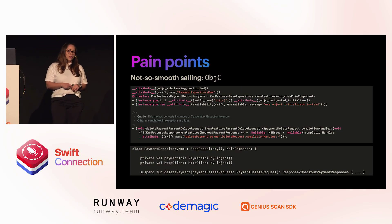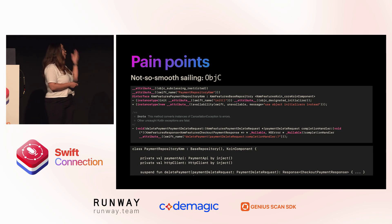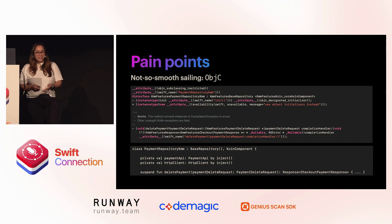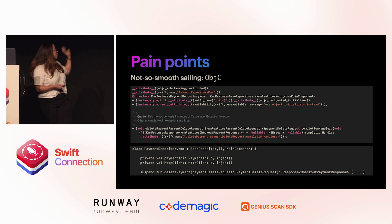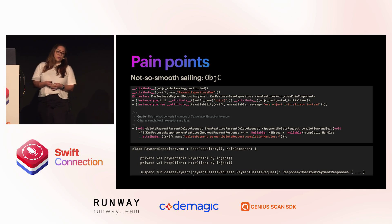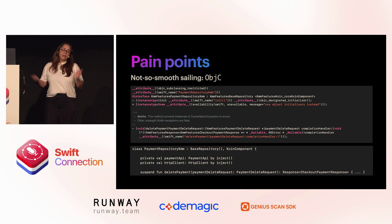The most known pain point of KMM is that it transpiles into Objective-C headers, which look like that. And if you're old like me, you might see that and your heart feels warm — Objective-C, how cute! But if you're not familiar with it, it might be confusing and a problem. The Kotlin code itself looks fairly familiar, but if you wanted to change something, you need to go to Android Studio, change it there, build it there, and then bring it to iOS. But it works.